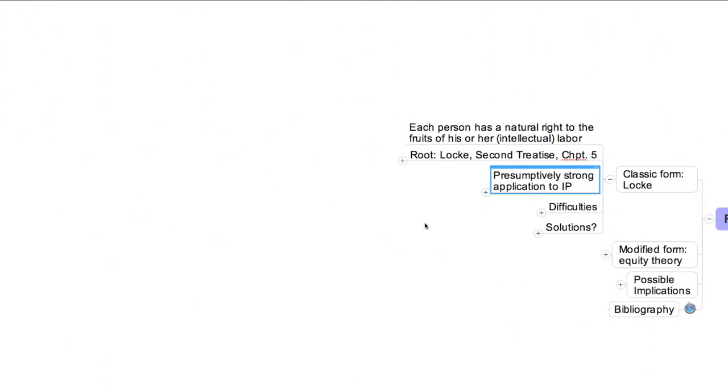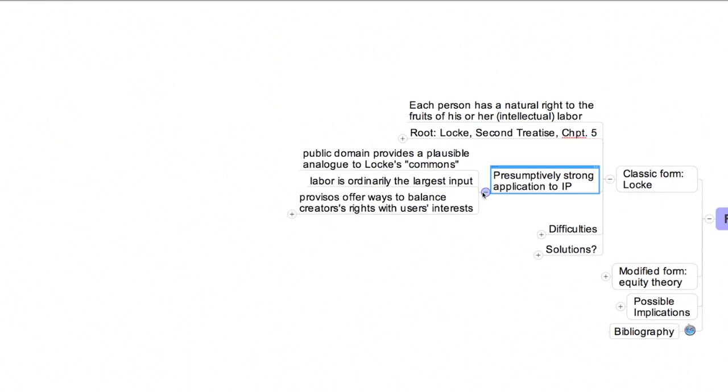It's widely thought that Locke's theory provides an even stronger justification for intellectual property than it does for property in land. The following circumstances underlie this assumption. First, the public domain, by which I mean the large body of unowned cultural products that all authors draw upon when creating their own works, provides a plausible analog to the land held in common that figures so importantly in Locke's argument.